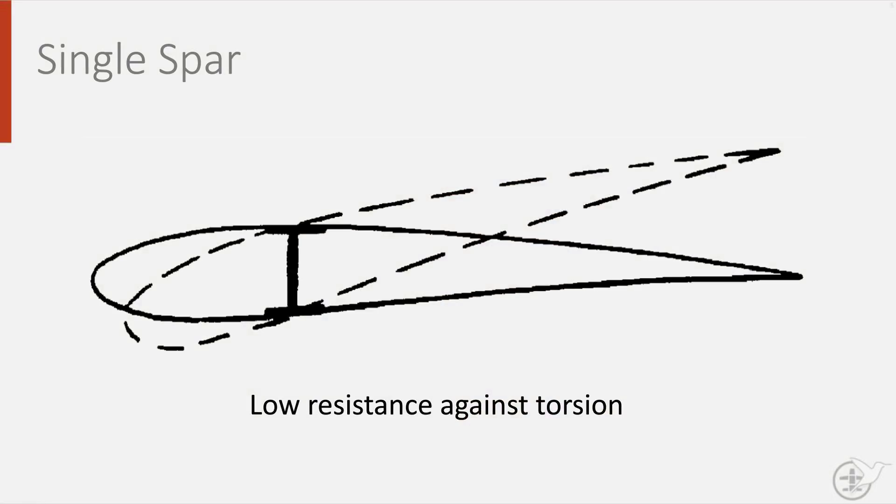If ribs take care of shear load and spars are primarily focused on bending, how is torsion dealt with by the structure? If a wing only has a single spar, as shown in the drawing here, it is easy to see that it has a low resistance against torsion. This is why most wings have at least two spars.